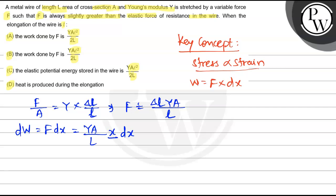So the total work done equals integration of dW. The constant is YA/L, so the integration of YA/L x dx with limits 0 to L. This equals YA/L times integration of x dx.